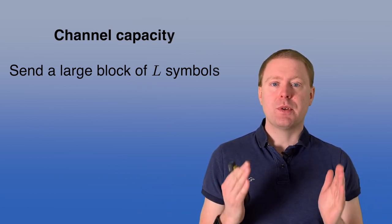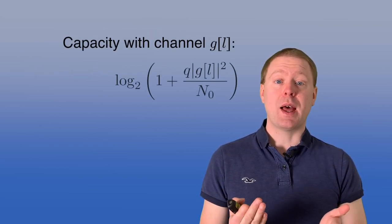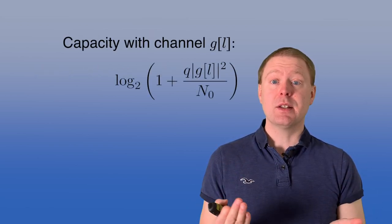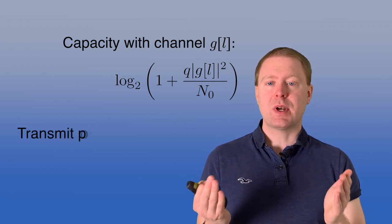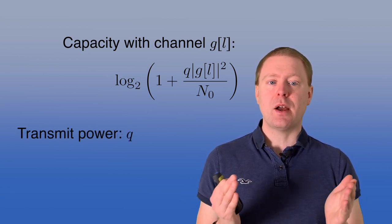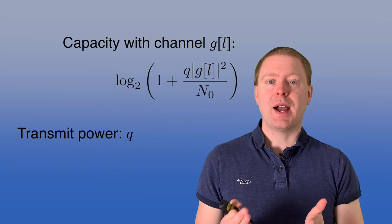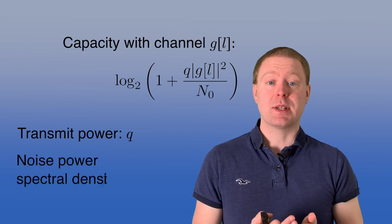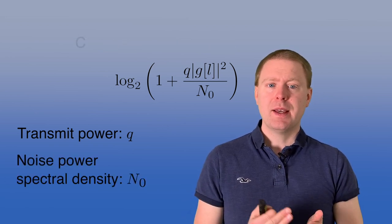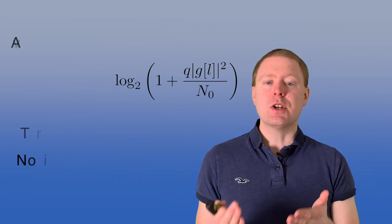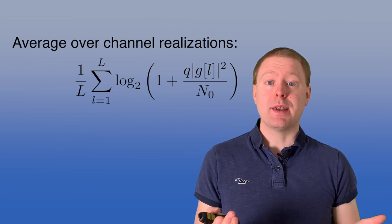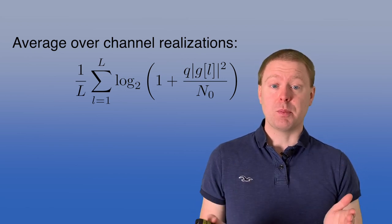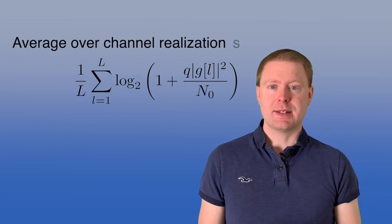Then for each of those realizations, you compute what would have been the capacity: log₂ of 1 plus Q, which is the transmit power, times the absolute value squared of G_L, divided by N₀, which is the noise power spectral density. Then you average over those things — you sum them up and divide by the number of realizations in your block, L.